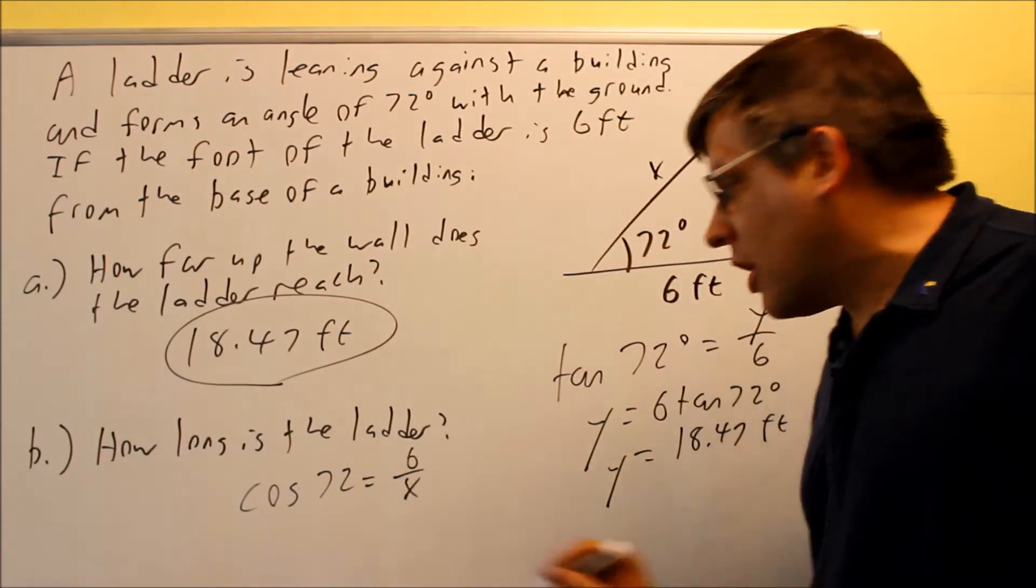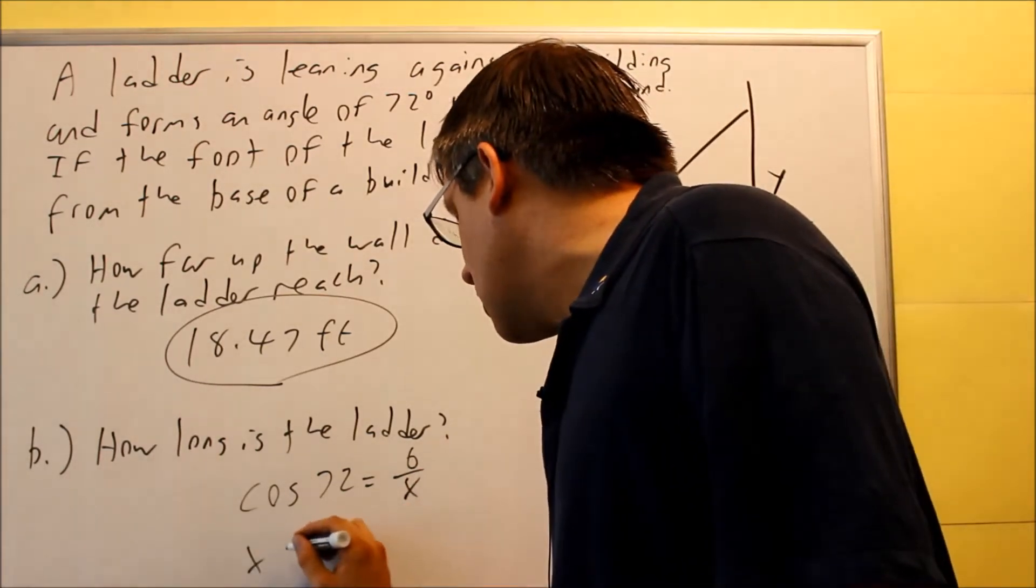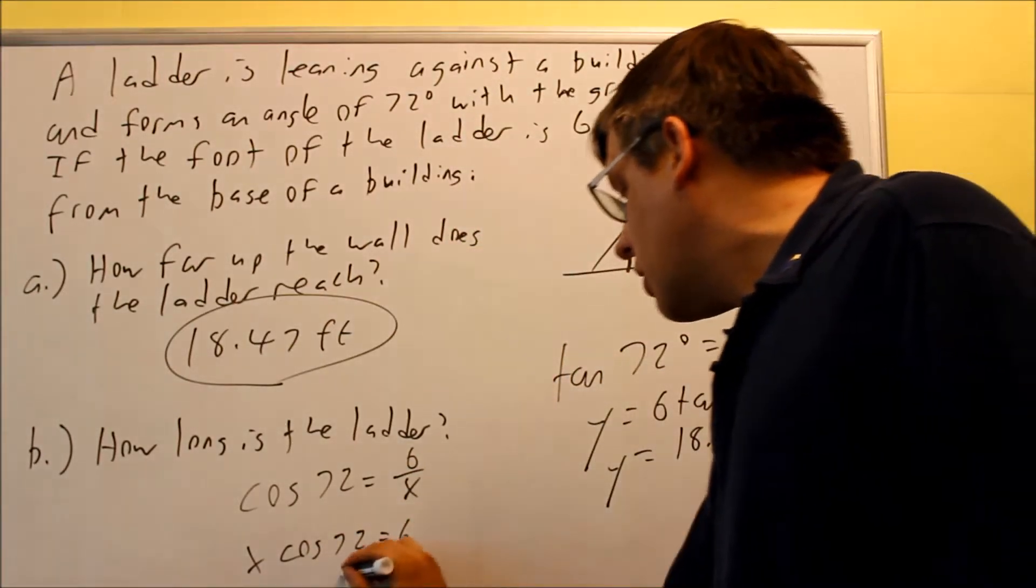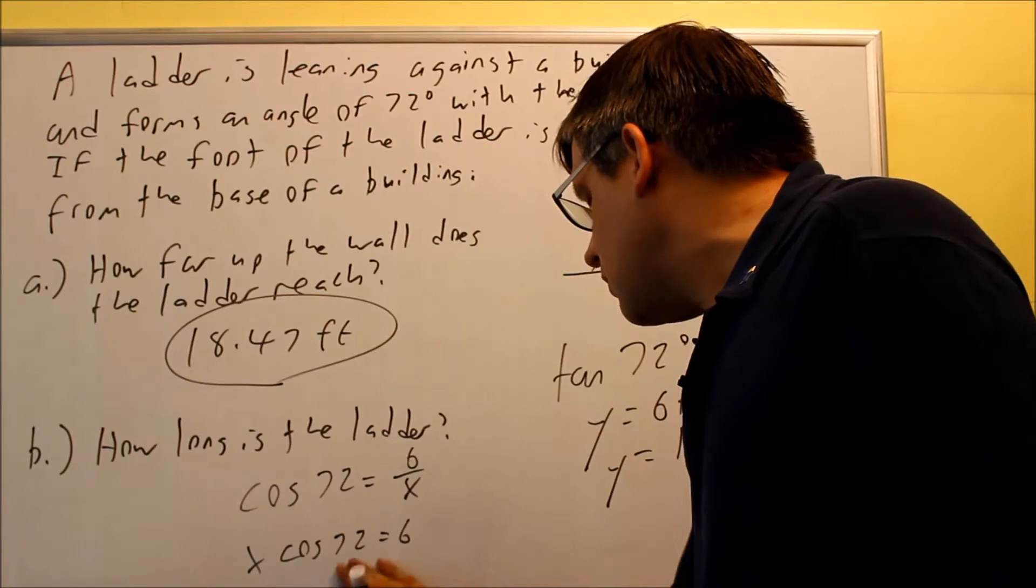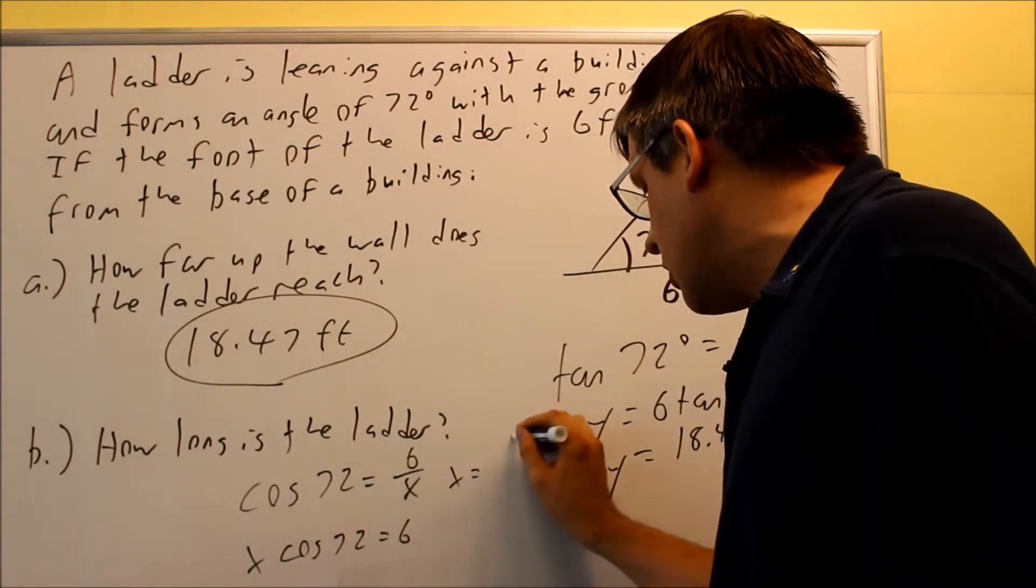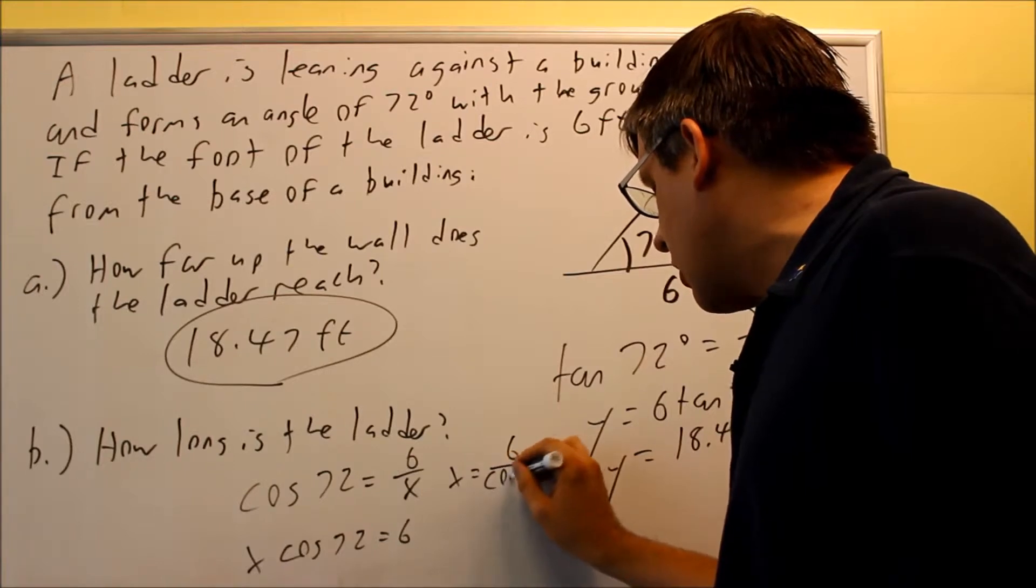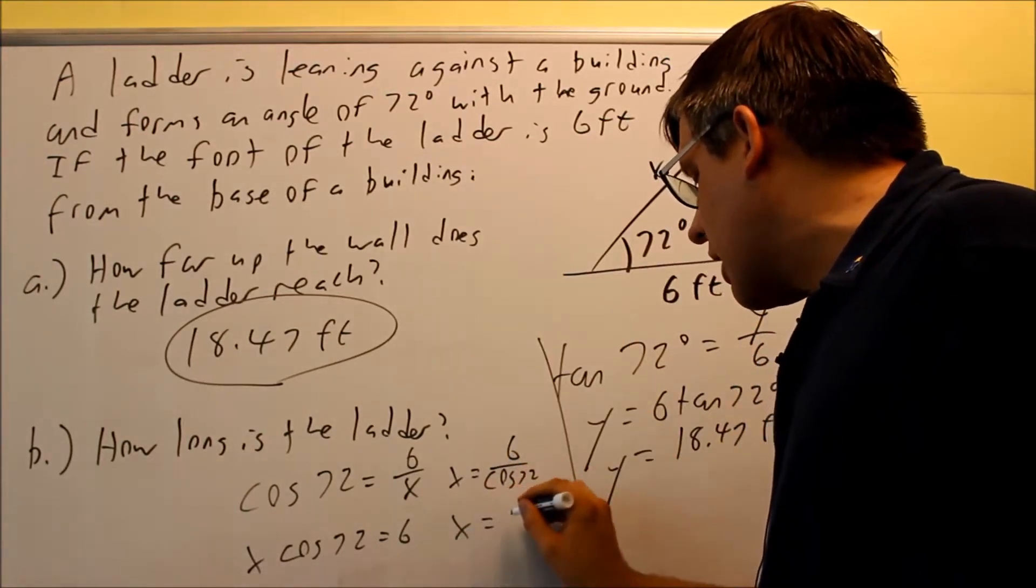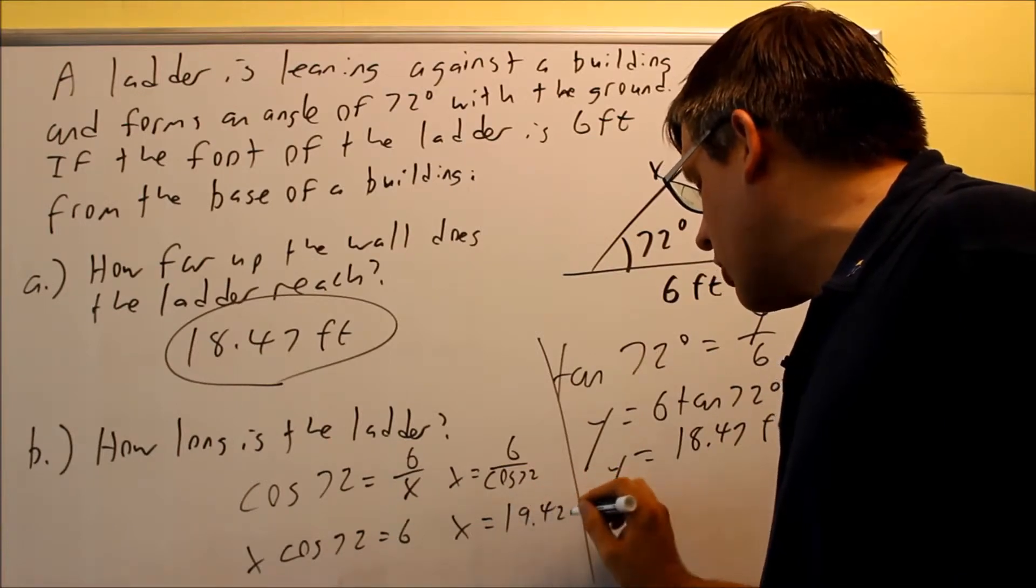We need to cross multiply this. We're going to get X cosine 72 is equal to six, but then we want to divide both sides. So if we do, we get X is equal to six divided by cosine 72, and if we put this into the calculator, we get 19.42 feet.